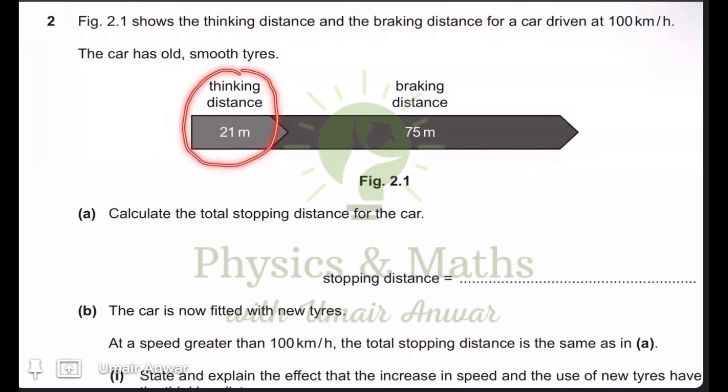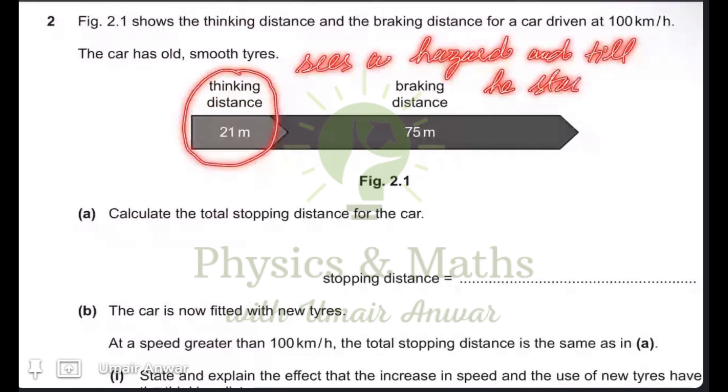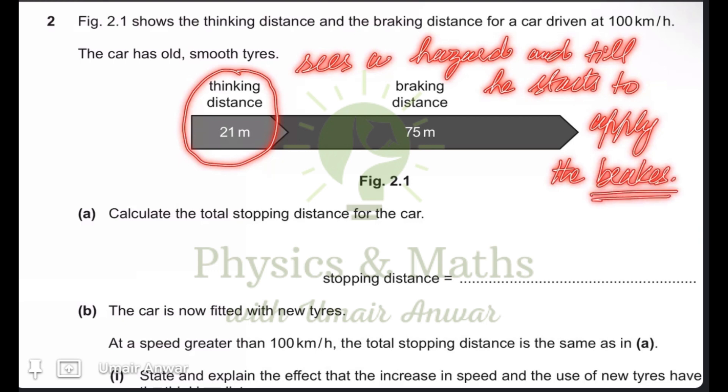Now, thinking distance is the distance covered when the driver sees a hazard or something because of which he has to apply brakes and till he starts to apply the brakes. So during this period he would be processing, his mind would be processing and taking a decision that he has to apply a brake. So the distance covered between seeing a hazard and applying the brakes is called the thinking distance of a driver.